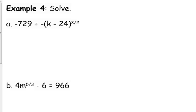Let's look at negative 729 equals negative k minus 24 to the 3 over 2. You cannot put that negative inside those parentheses. The only way you can deal with it is by moving it to the other side by dividing by negative 1.